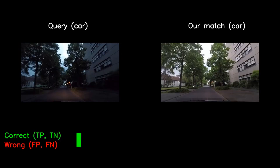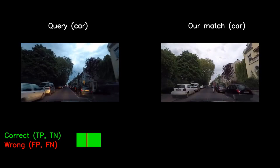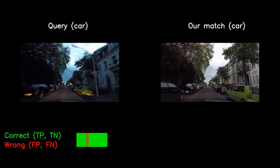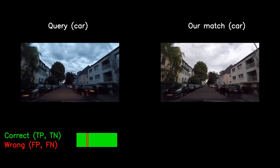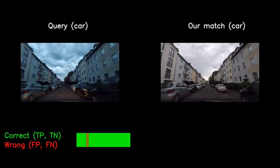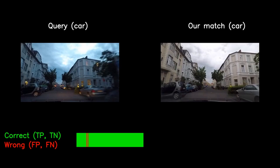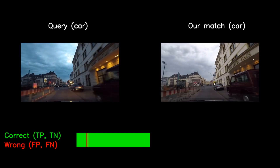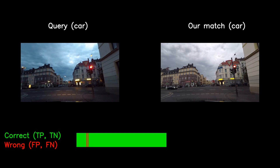We performed experiments in different setups. First, we select both the query sequence and reference map to be collected with the car using the same camera but during different points in time. The colored progress bar at the lower side of the video specifies if the currently matching pair was found correctly or not. Correct matches are those that correspond to ground truth matches, also known as true positives, as well as those that were correctly not found, also known as true negatives.